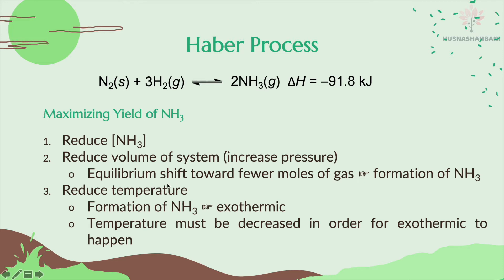Next, reduce the temperature. We know that the forward reaction is exothermic. When the temperature is reduced, you need more heat to balance the system back. Since exothermic reaction produces heat, the exothermic (forward) reaction becomes favorable. So the equilibrium shifts towards the right and you will produce more NH₃ — that is why you reduce the temperature to form NH₃ via the forward reaction.